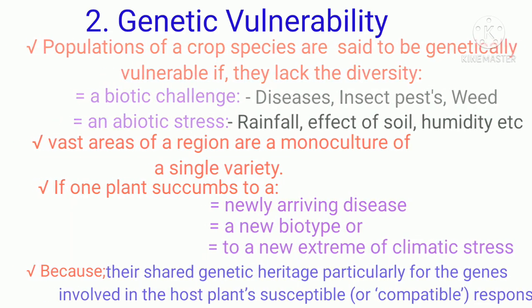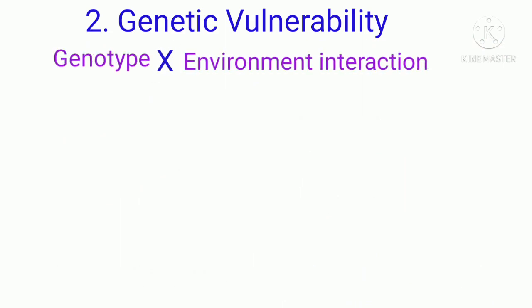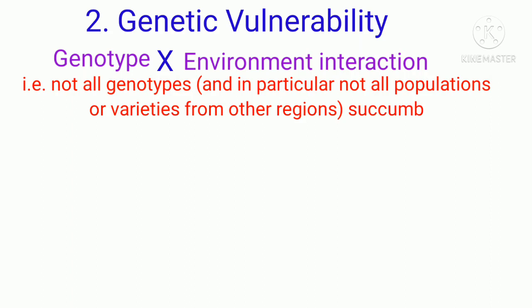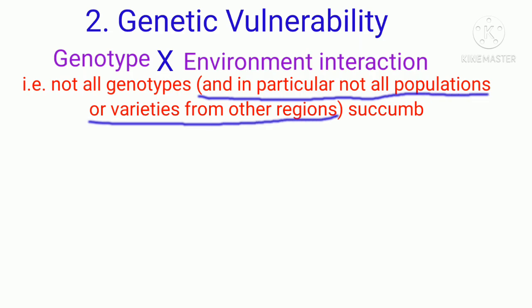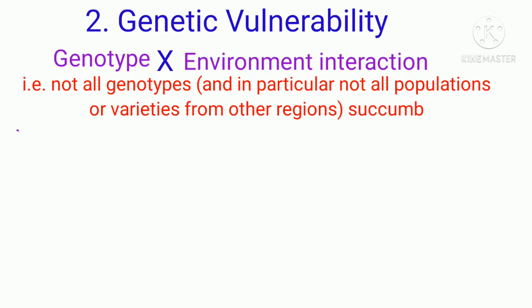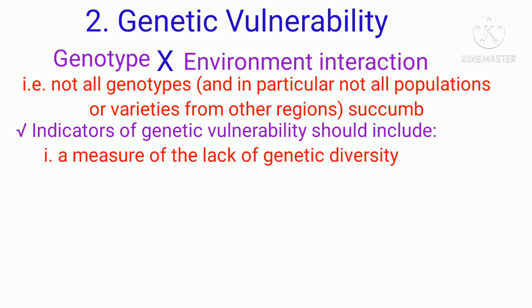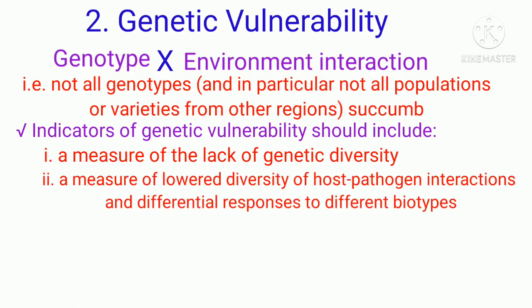Genetic vulnerability should also address the notion of genotype-environment interactions. Not all genotypes succumb as readily as the whole population to yield loss. Therefore, indicators of genetic vulnerability should include: a measure of the lack of genetic diversity, particularly for resistance genes affecting host plant response to major likely disease species, and a measure of lower diversity of host-pathogen interactions and differential responses to different biotypes with some spatial structure.